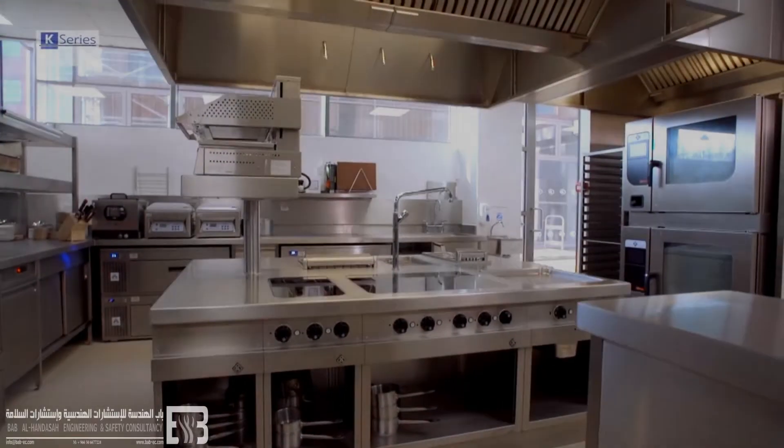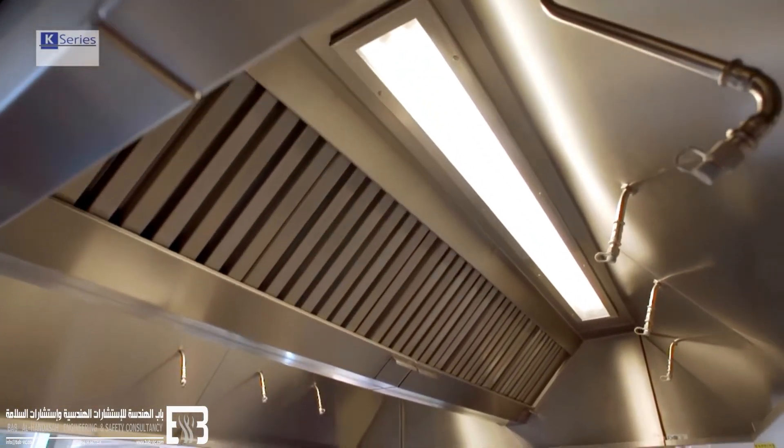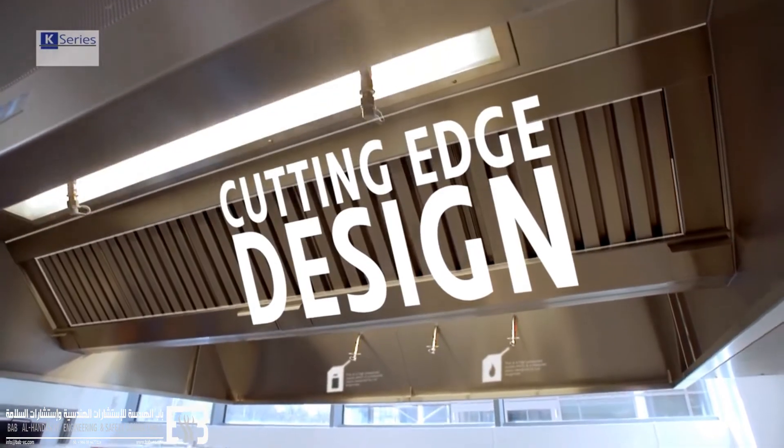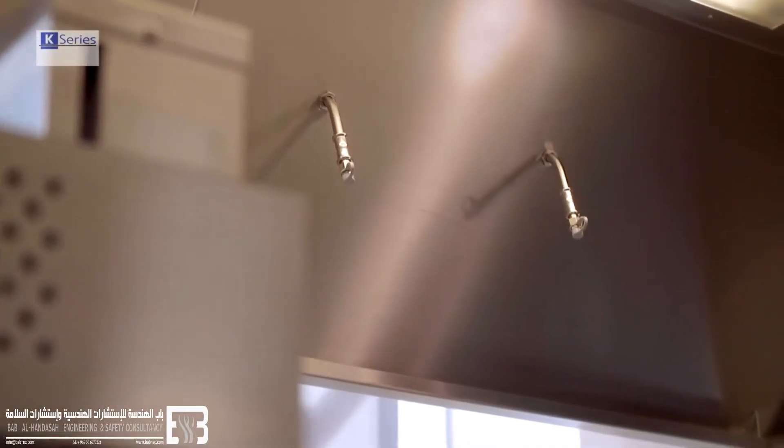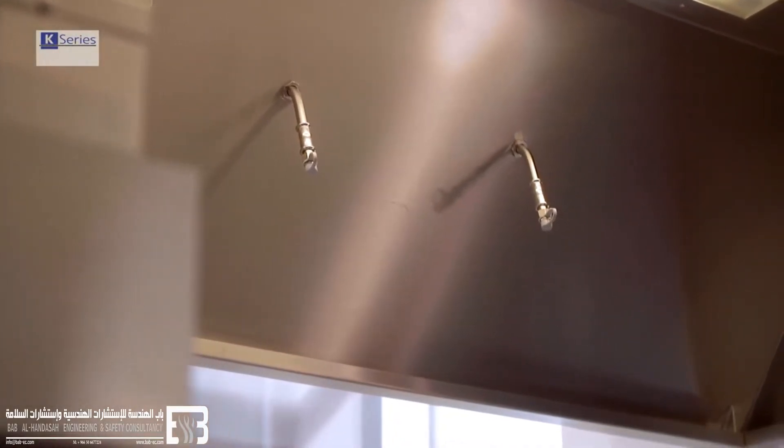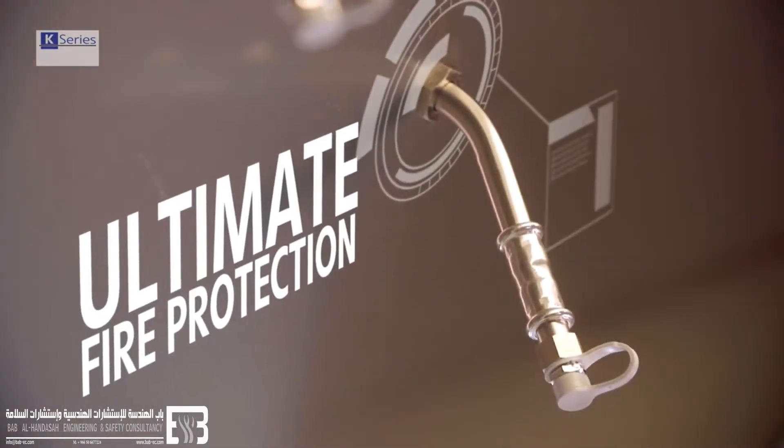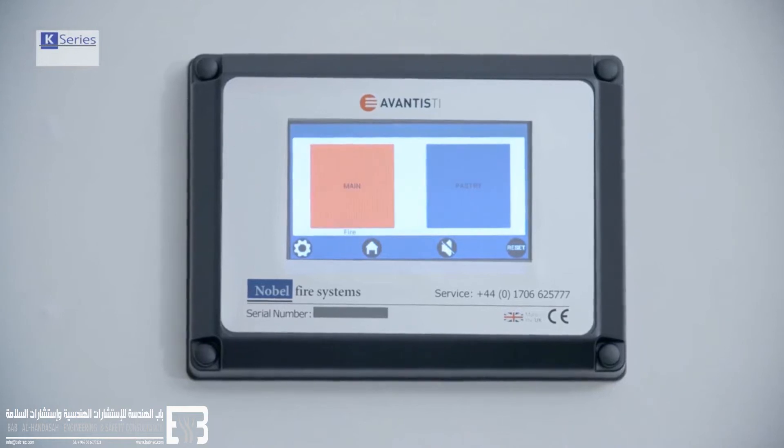Designed to meet the harsh realities of the commercial kitchen, the Nobel K-Series perfectly combines two critical elements: cutting-edge, aesthetically sympathetic design and the most efficient kitchen fire protection possible, with state-of-the-art electrically operated components and no reliance on outdated mechanical technology.